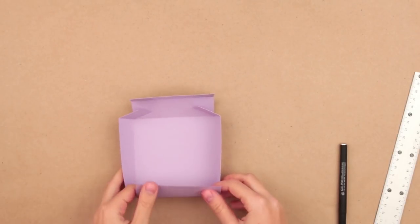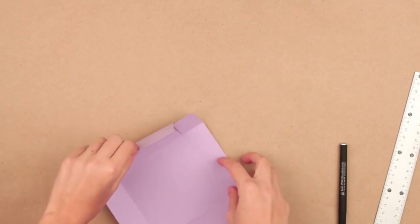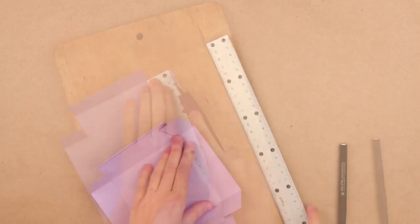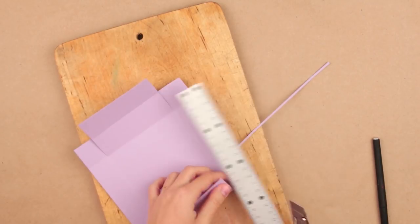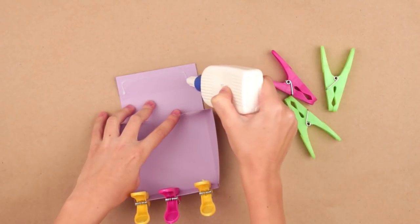Now make the lid. Follow the same steps. The only difference is to measure out 1 inch instead of 2 each time. All the other steps are the same.